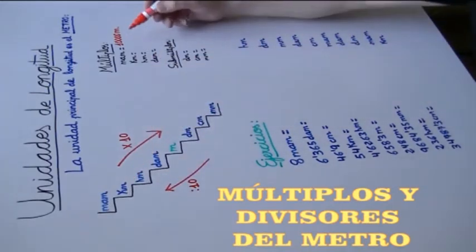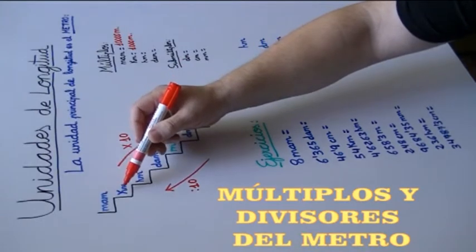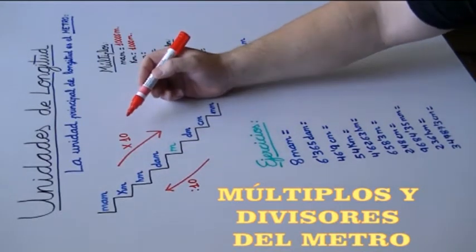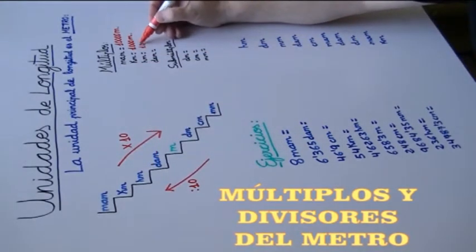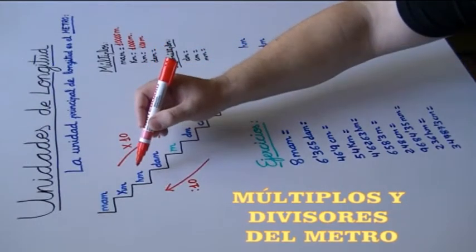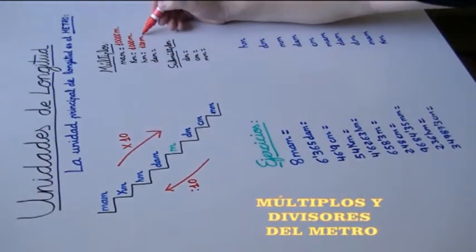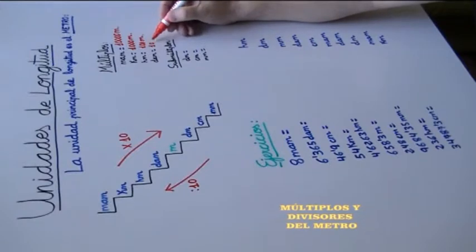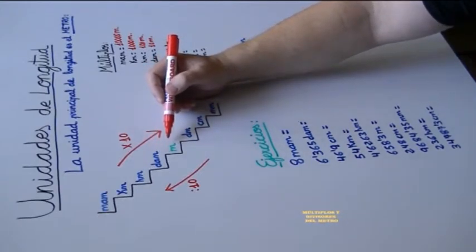Luego le sigue el kilómetro, que es igual a 1.000 metros. Porque si estamos en el escalón del kilómetro y tenemos que bajar al metro, bajamos 1, 2 y 3 escalones: 1 por 1.000 será igual a 1.000 metros. A continuación le sigue el hectómetro, que es igual a 100 metros, porque bajamos 2 escalones: el decámetro y el metro. 1 por 100 = 100 metros. Para terminar con los múltiplos, el decámetro es igual a 10 metros, porque entre el decámetro y el metro solamente tenemos que bajar un escalón, y 1 por 10 es igual a 10 metros.